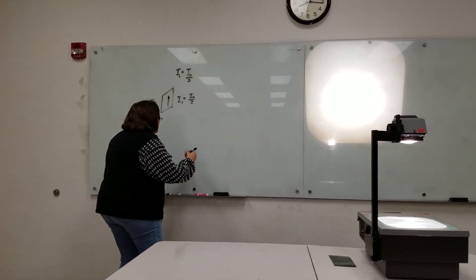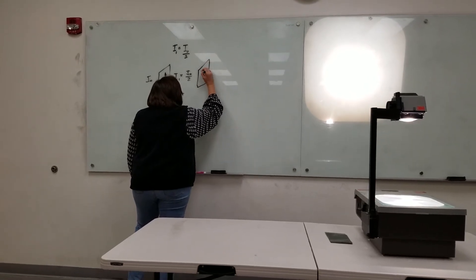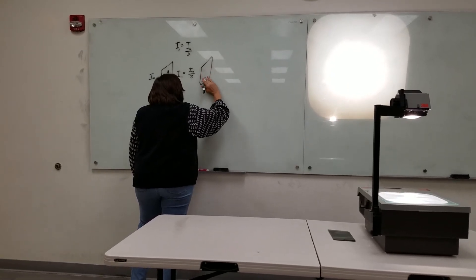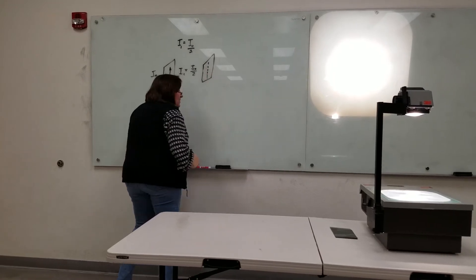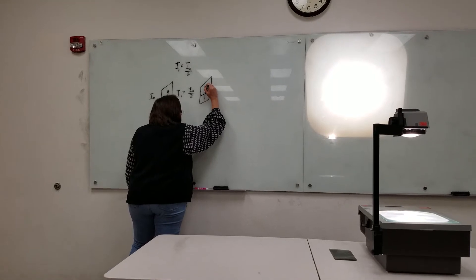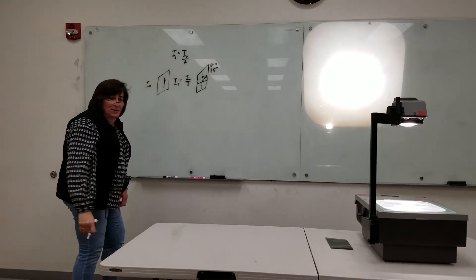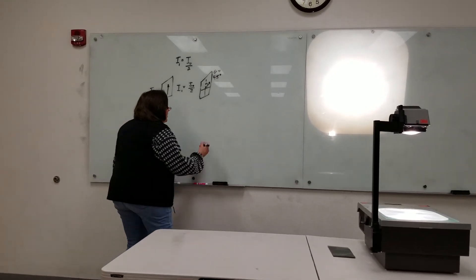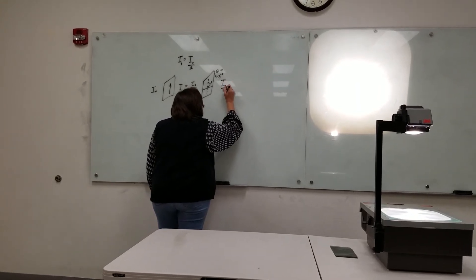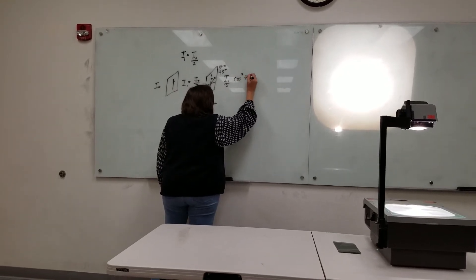But after that, the second polarizer is polarized at 45 degrees relative to the vertical. So that one, now let's do it this way. Let's do it as a dashed line. It's the original direction of polarization. Now we're going to go at 45 degrees relative to the first polarizer. And so the intensity coming out here is what's incident on it, I naught over 2 times cosine squared of 45 degrees.